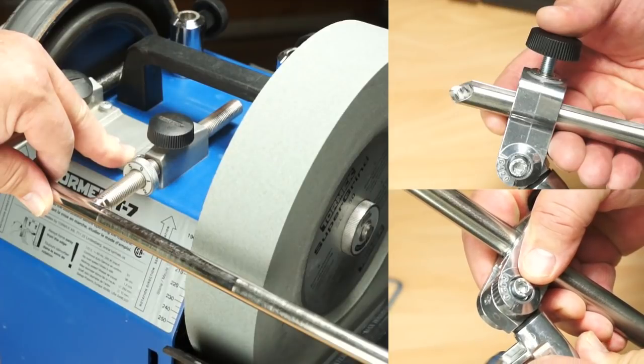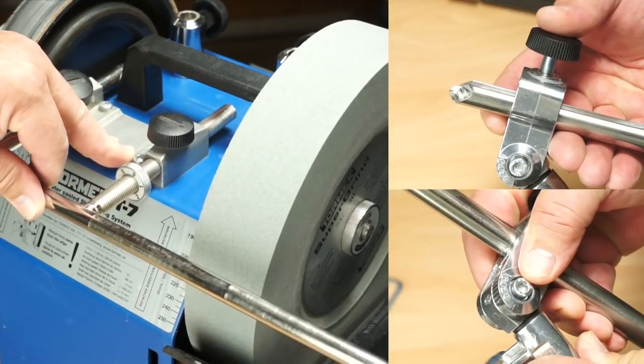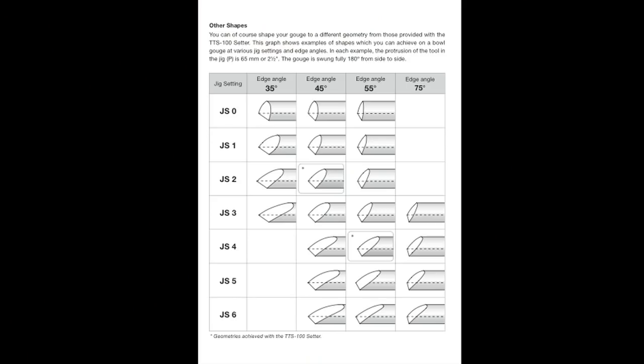By varying the amount of tool protruding from the front of the jig, the angle between the axis of rotation and the tool, and the position of the universal support relative to the grindstone, you can create a limitless range of profiles on woodturning gouges.